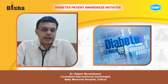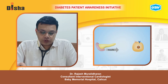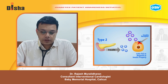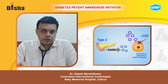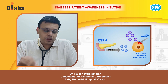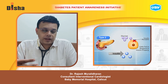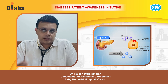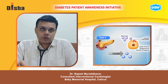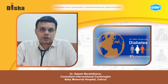Type 2 diabetes results when the body does not produce enough insulin or is unable to use insulin properly — this is called insulin resistance. When the body is resistant to the effects of insulin, the pancreas produces more insulin to outweigh the resistance. But over time it cannot keep up and cannot make enough insulin to keep blood glucose at normal levels. Approximately 90% of diabetes cases worldwide are type 2 diabetes, not type 1.